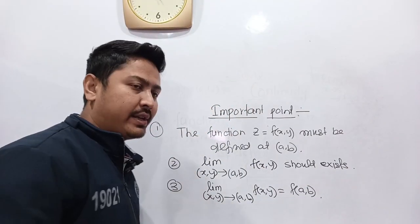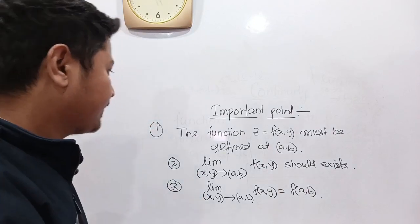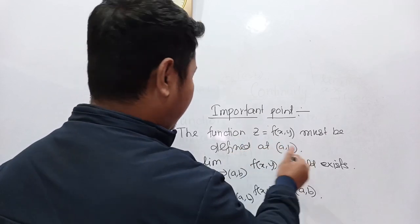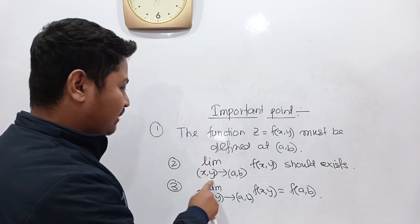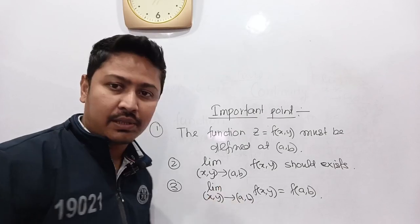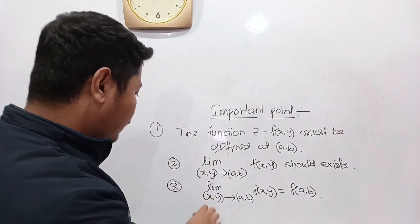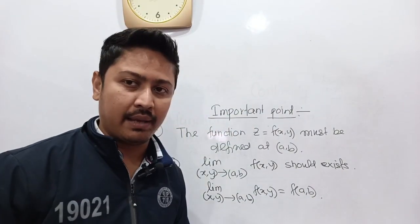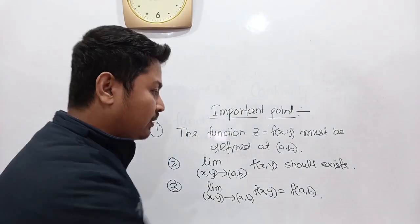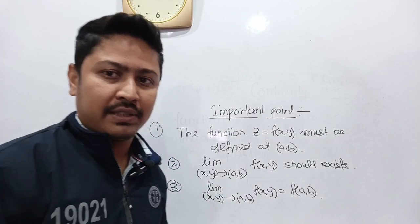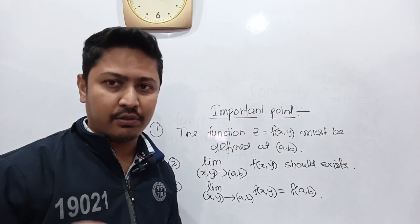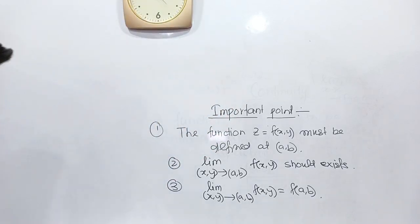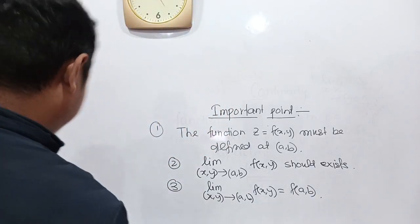So summarizing: first, the function must be defined at the point (a,b). Second, limit as (x,y) approaches (a,b) of f(x,y) should exist. Third, the limit value must be equal to f(a,b). Only then is the function z = f(x,y) continuous. These are the important points regarding continuity of a function of two variables.